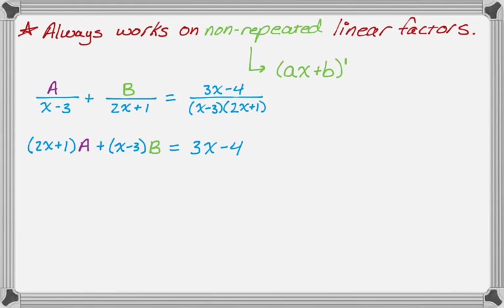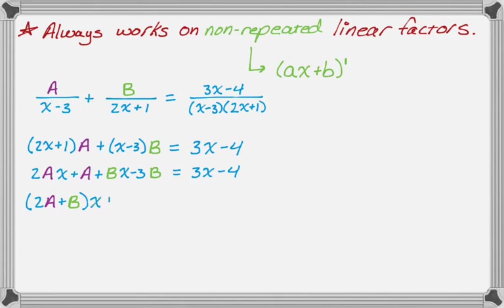One of the factors cancelled each time on the left-hand side, and on the right-hand side the whole denominator is gone. Expanding gives us 2ax plus a plus bx minus 3b equals 3x minus 4. Rearranging the left-hand side, the coefficient of x is 2a plus b, and the constant term is a minus 3b.